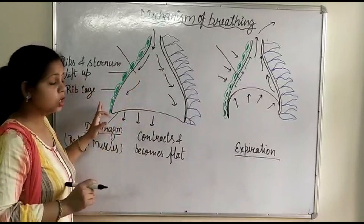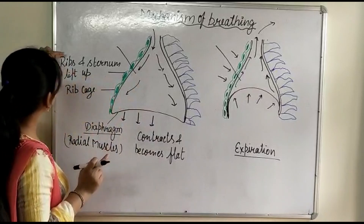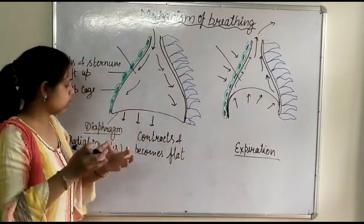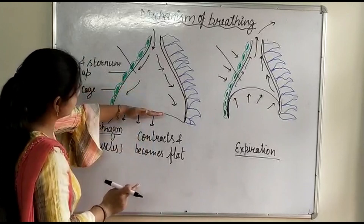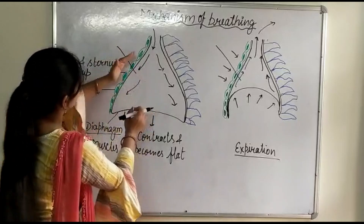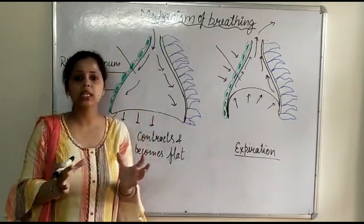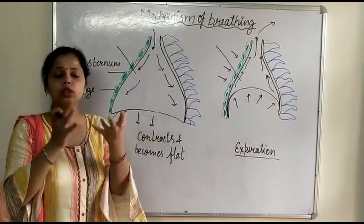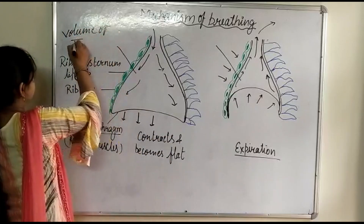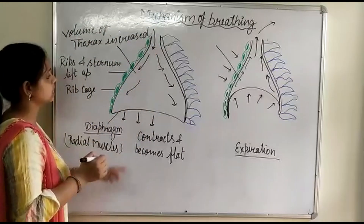The green color structures shown in the diagram are the ribs and the sternum. The external intercostal muscles of the ribs contract, due to which the ribs and sternum lift upward and outward. So due to contraction of the diaphragm — making it flat — and lifting of the ribs and sternum, the volume of the thoracic cavity is increased.